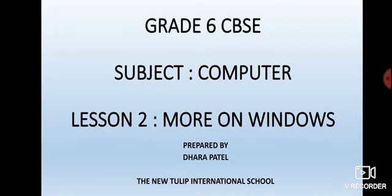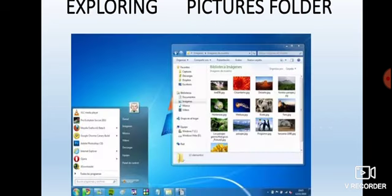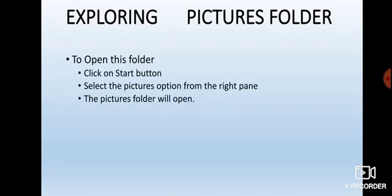We will be exploring the Pictures folder that is already available in our computer. Whenever you click on the Pictures tab, you can see this type of window — this is the Pictures window available in the Pictures library. By clicking on that Pictures library, you will see this type of window where every picture you have stored in that folder is displayed.